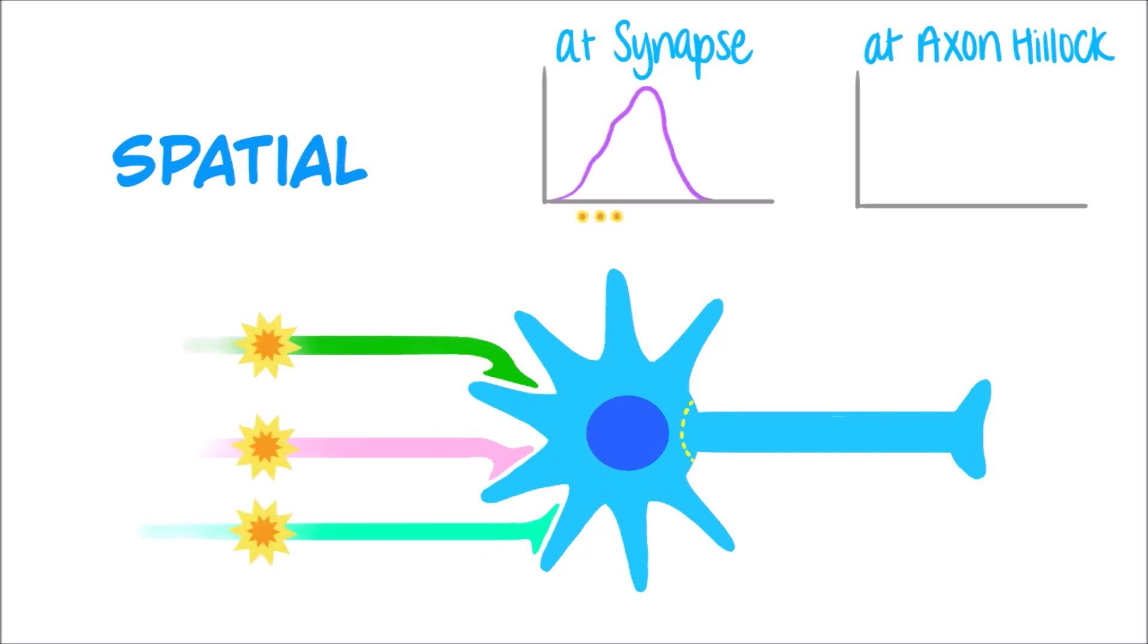So here, these three presynaptic neurons may each have an action potential traveling down their axon that synapse simultaneously at the postsynaptic neuron.